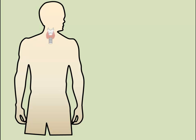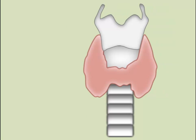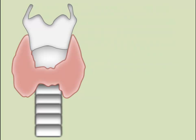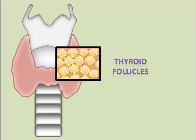The thyroid gland is located in the throat, directly inferior and anterior to the larynx. It sits like a bow tie across the larynx and is composed of two lobes connected by an isthmus. If we examined a magnified version of the thyroid gland, we would see that it is divided into segments called follicles, in which the thyroid hormones are produced.